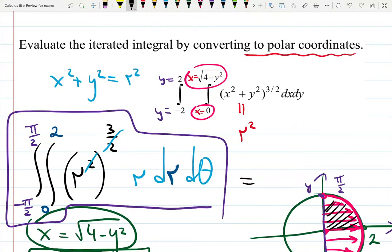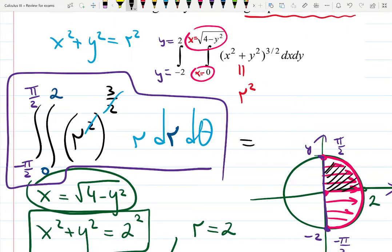This information we gave you, that x is running from a function to a function. Function x equals 0 is actually y axis. So the x is running from the left wall.